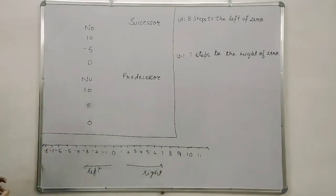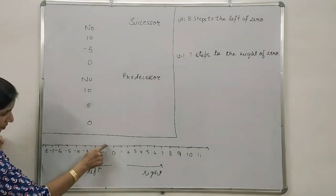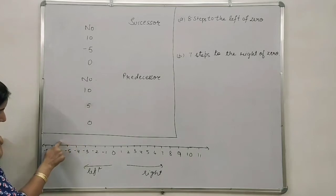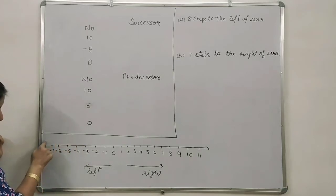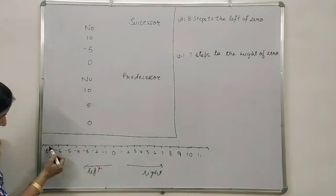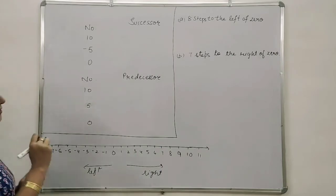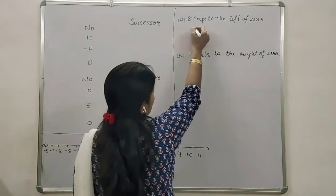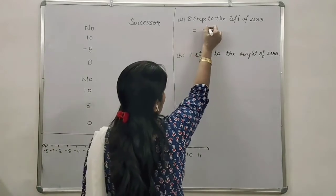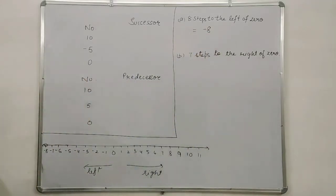If we move 8 steps to the left, counting 1, 2, 3, 4, 6, 7, 8. We can start counting from here. And if we reach after 8 steps, what will be the answer if we move 8 steps to the left of zero? The answer is minus 8.